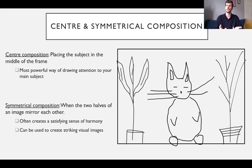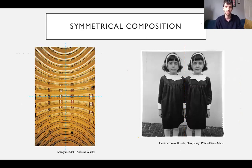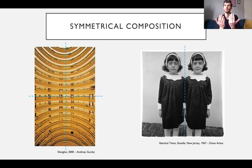Symmetrical composition can create a sense of balance and harmony within the image. Andreas Gursky is a master of using symmetry with architectural photography in order to create these striking visual patterns - two lines of symmetry, at least vertical and horizontal and possibly even some diagonal ones. And on the right here, Diane Arbus captured this iconic image of identical twins. There's really no other way you can compose this, because what the composition is doing is basically emphasising that mirror image of these two siblings.